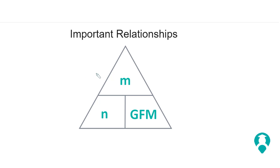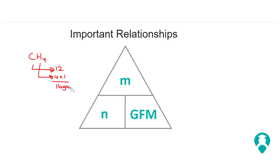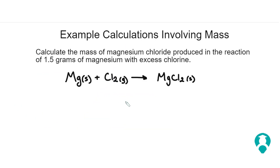Let's look at the triangle we're using. You should be familiar with this — it's mass, number of moles, and gram formula mass. You can work out gram formula mass from your data booklet or the periodic table. For methane, carbon is 12 and hydrogen is 1, with four of them, so 4 times 1 gives a gram formula mass of 16 grams. Mass equals moles multiplied by GFM. Number of moles (n) equals mass divided by GFM.